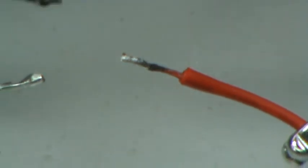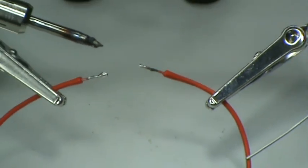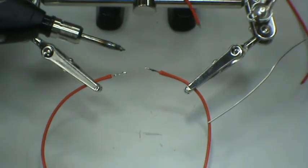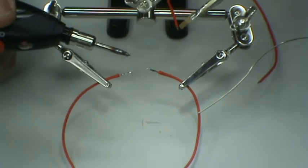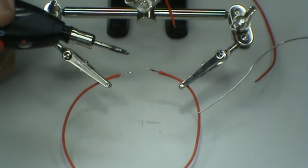Now we're going to connect the 24 gauge wires. While preheating the iron, we're going to apply some flux to the ends of the wire.